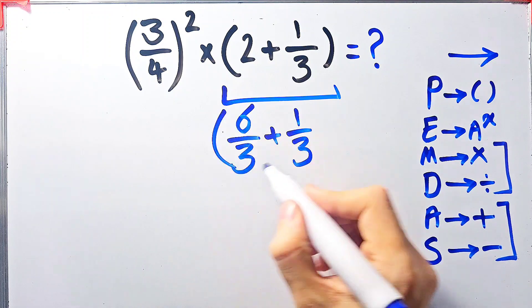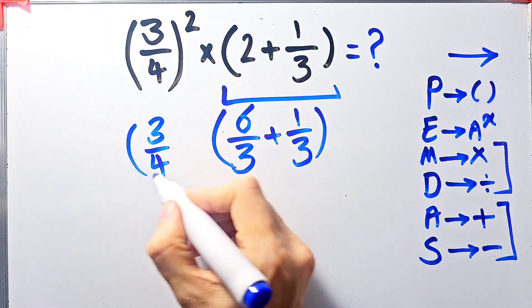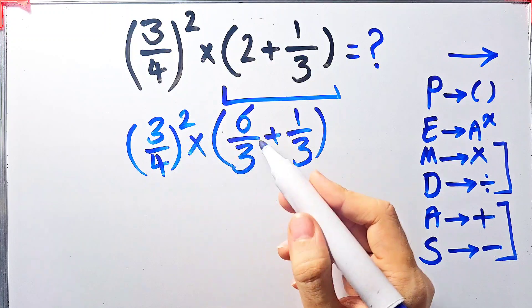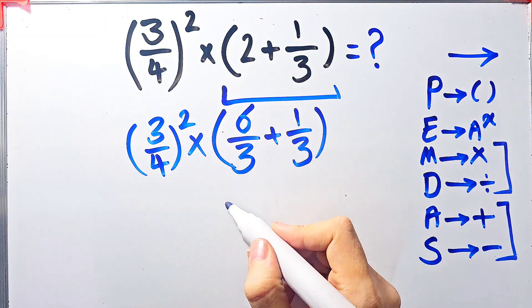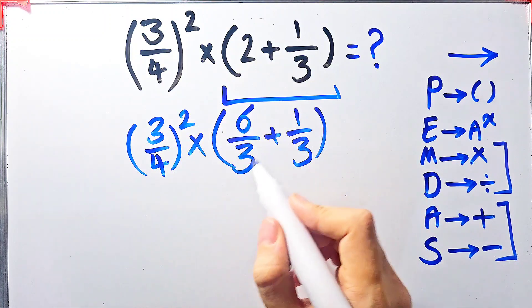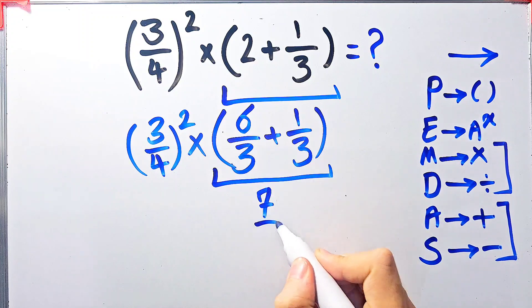Now the question is 3 over 4 to the power of 2, times open parentheses 6 over 3 plus 1 over 3 closed parentheses. Again we simplify these parentheses: 6 over 3 plus 1 over 3 equals 7 over 3.